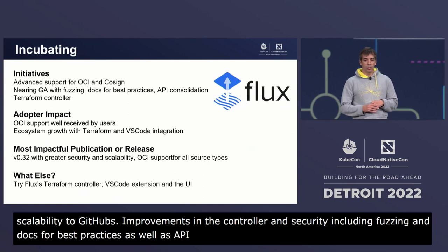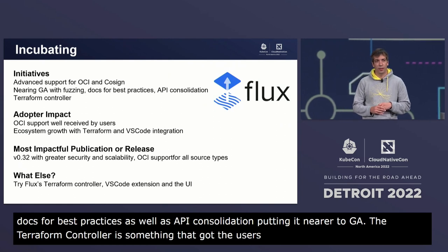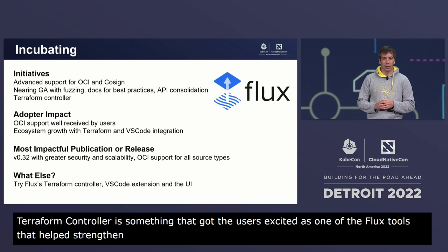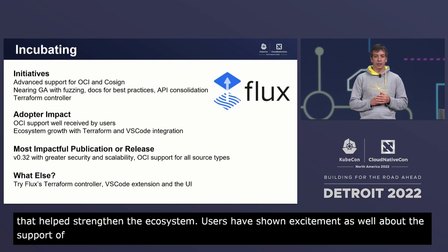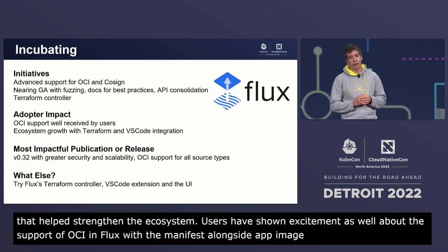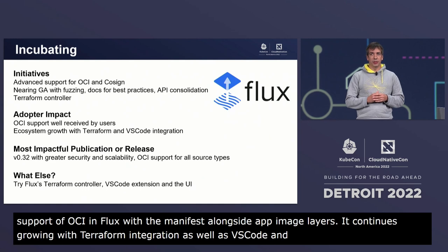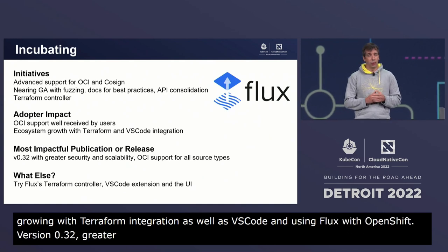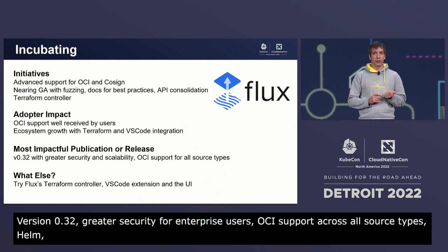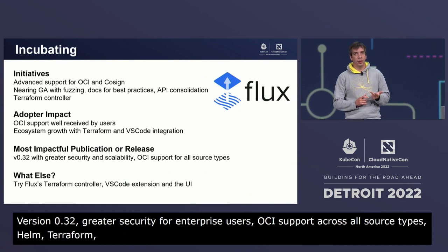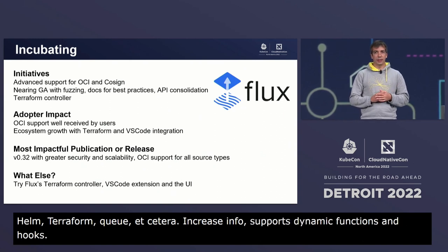The Terraform controller got users excited as one of Flux's tools that help strengthen the ecosystem. Users have also shown excitement about OCI support in Flux with manifests alongside app image layers. The ecosystem continues growing with Terraform integration, VS Code support, and using Flux with OpenShift. Version 0.32 brings greater data security for enterprise users and OCI support across all source types — Helm, customized plain YAML, Terraform, and more. The project asks everyone to try the Terraform controller, VS Code extensions, and the UI.